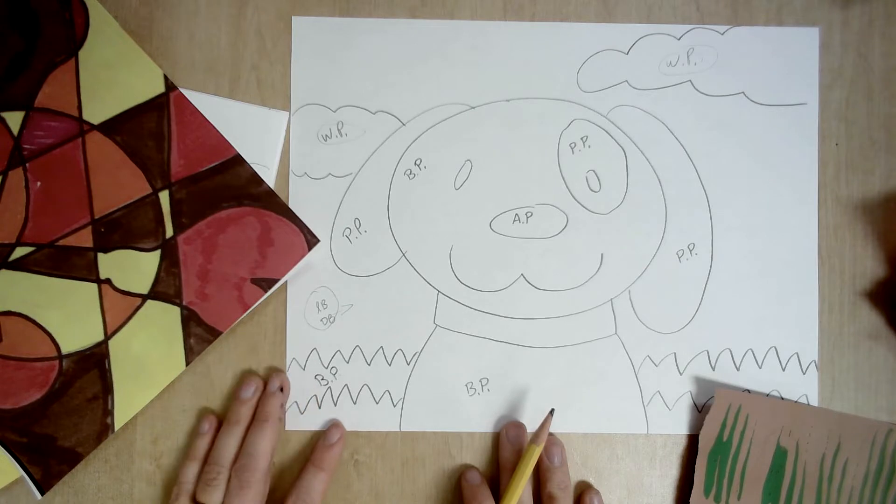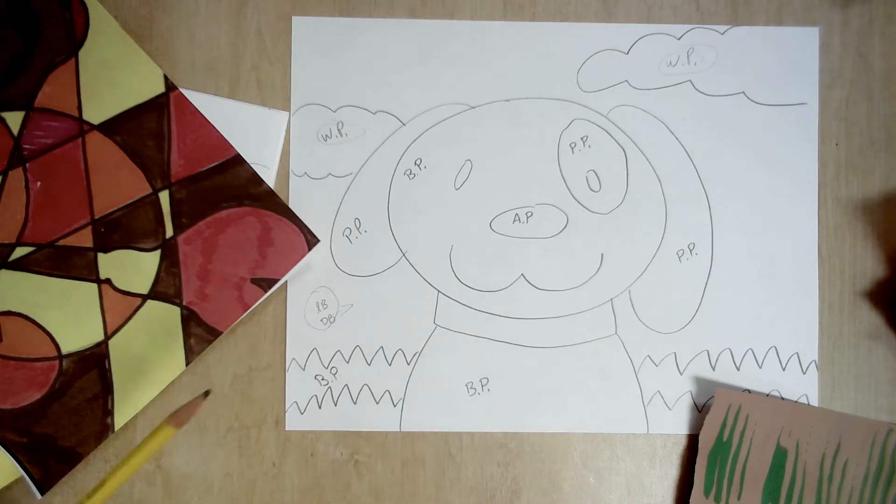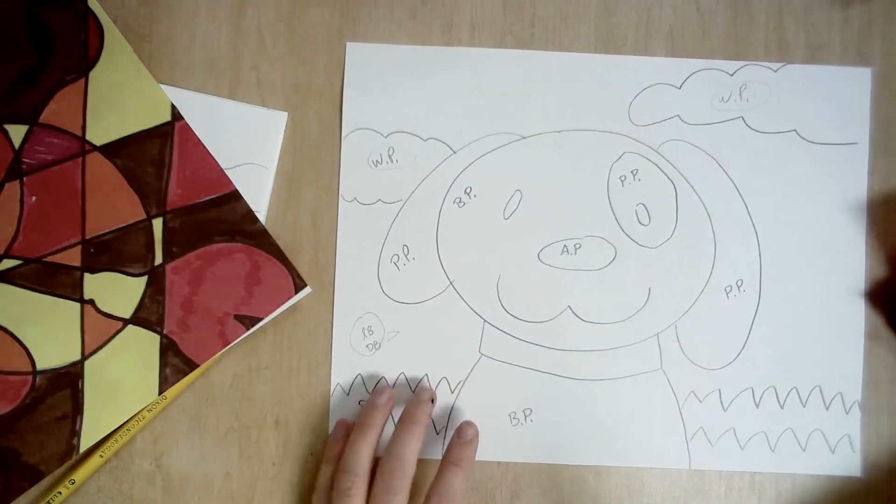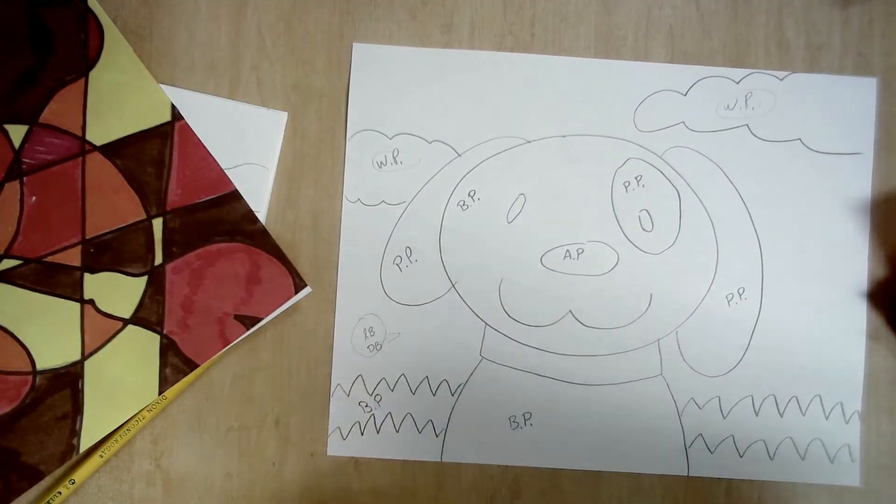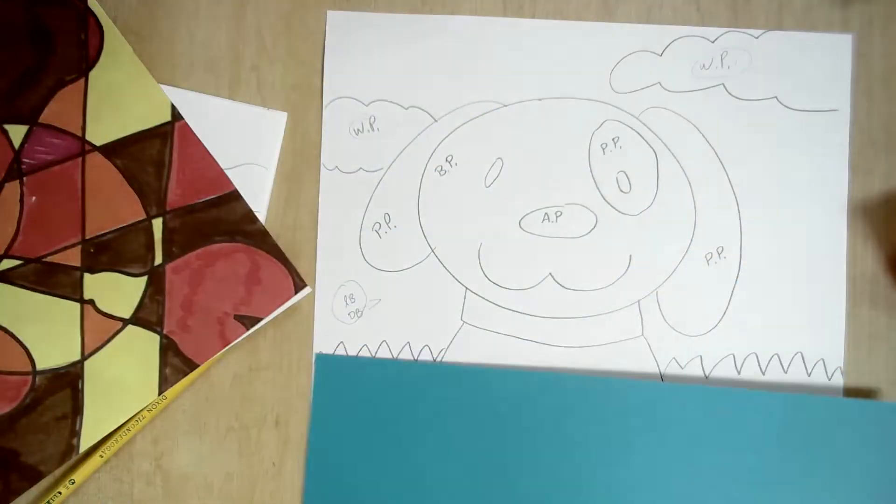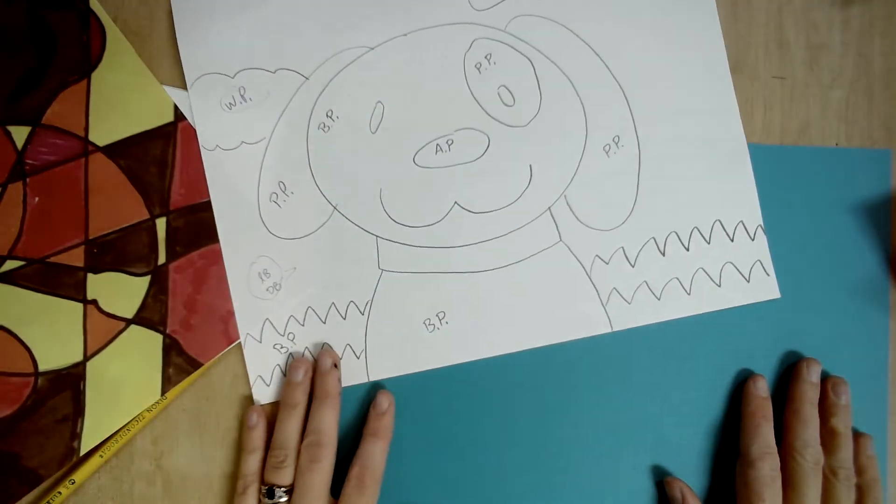After you figure out what you need, you can start cutting out your pieces and gathering everything together. So since I want my main background to be blue, I have the papers here. But if I make it dark blue, my dog's not going to stand out very much. So I'll make the background light blue. And I'm working from the back to the front.